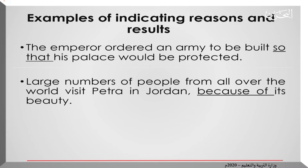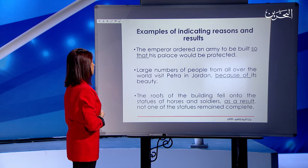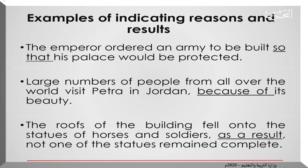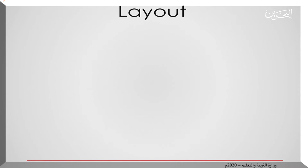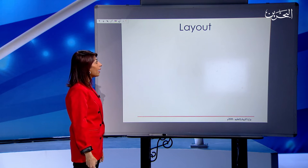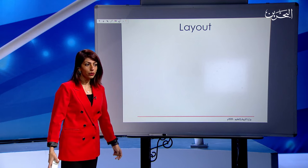The second example: 'Large numbers of people from all over the world visit Petra in Jordan because of its beauty.' This is another way of giving reasons. The third example: 'The roofs of the building fell onto the statues of horses and soldiers; as a result, not one of the statues remained complete.' So 'as a result' is giving you a result or an outcome.